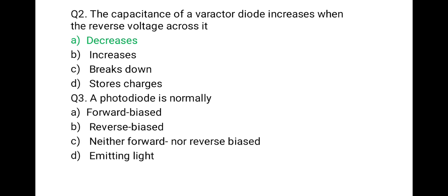The next question: a photodiode is normally — first forward biased, second reverse biased, third neither forward nor reverse biased, last emitting light. We know that a photodiode is a special diode which always works in reverse bias. So the correct option is B.